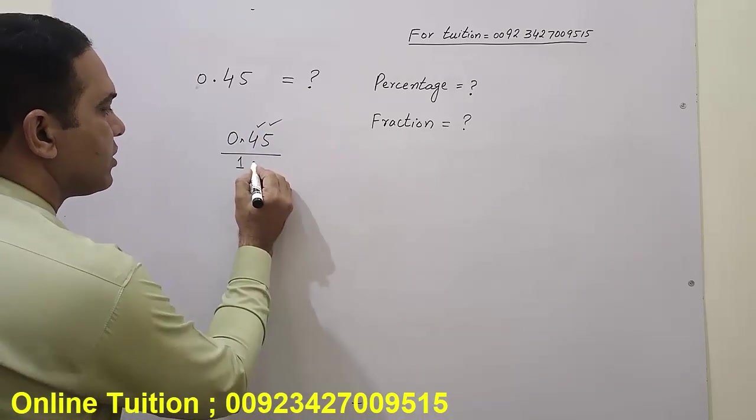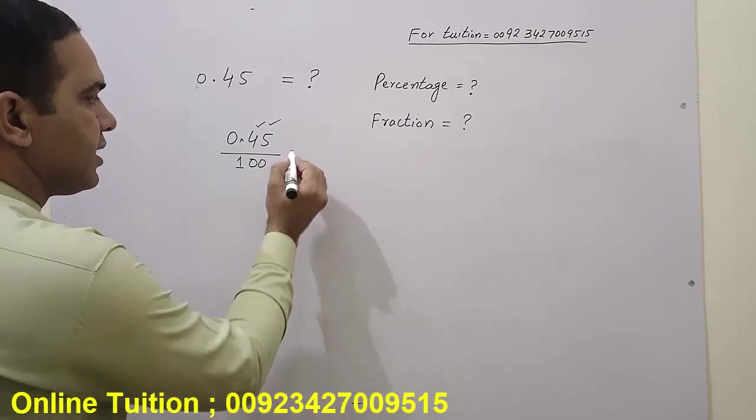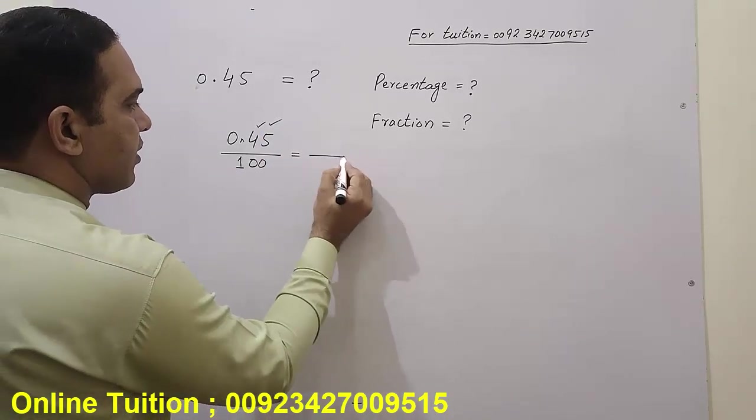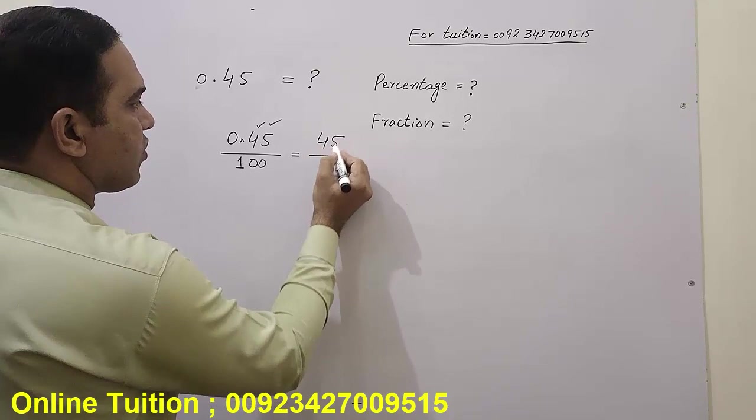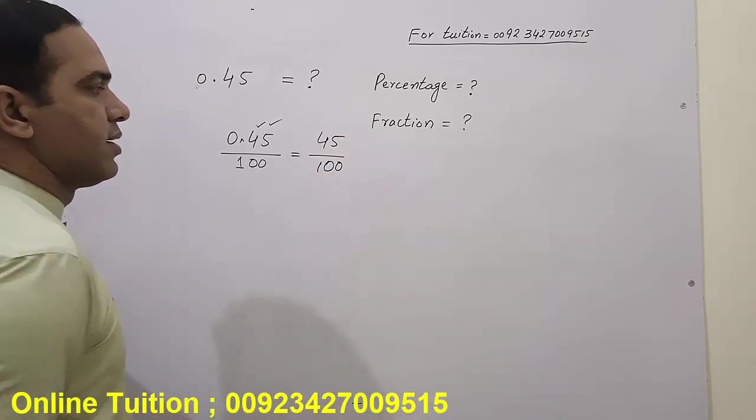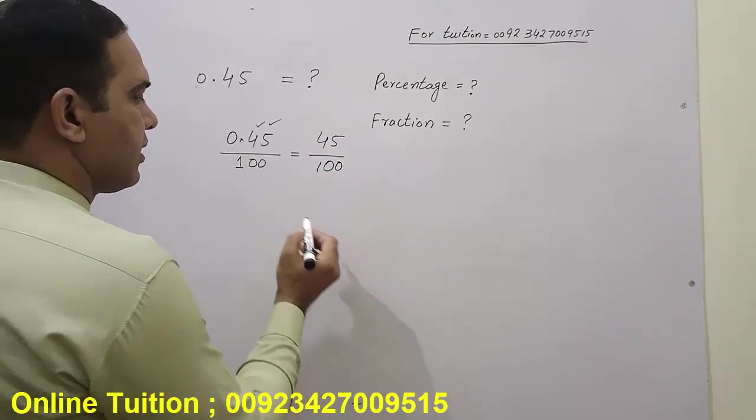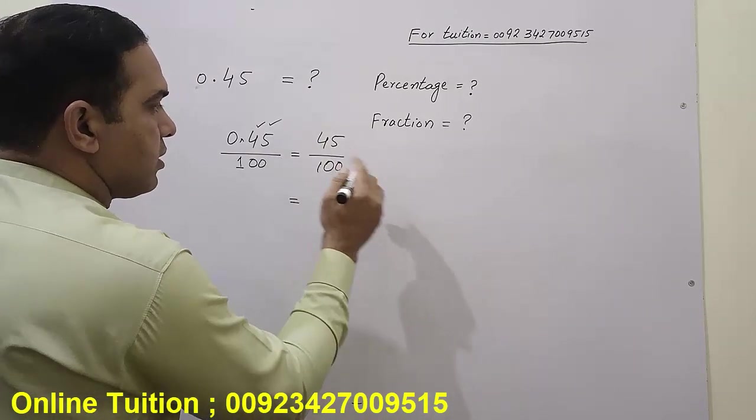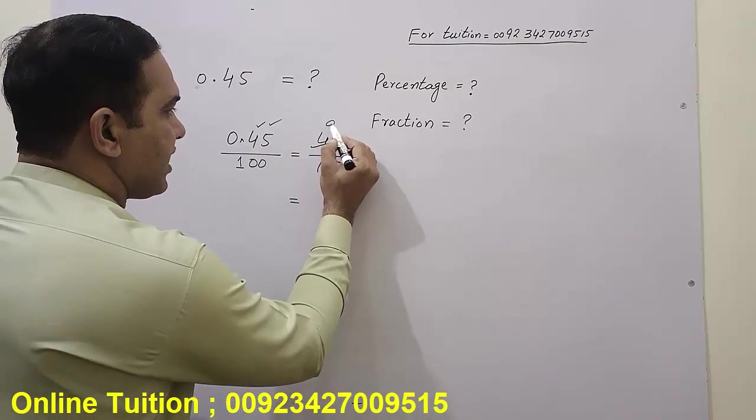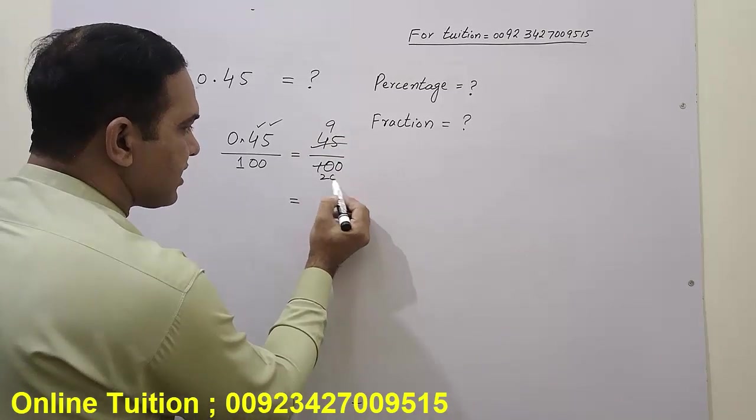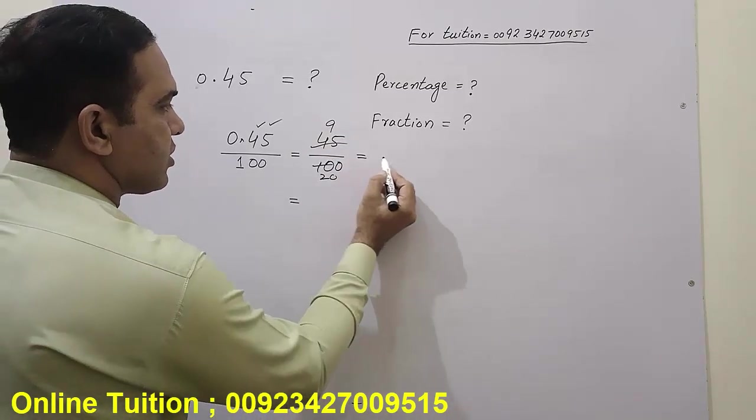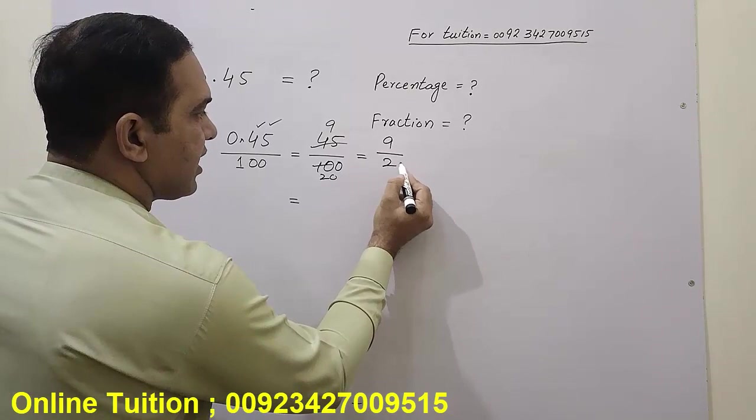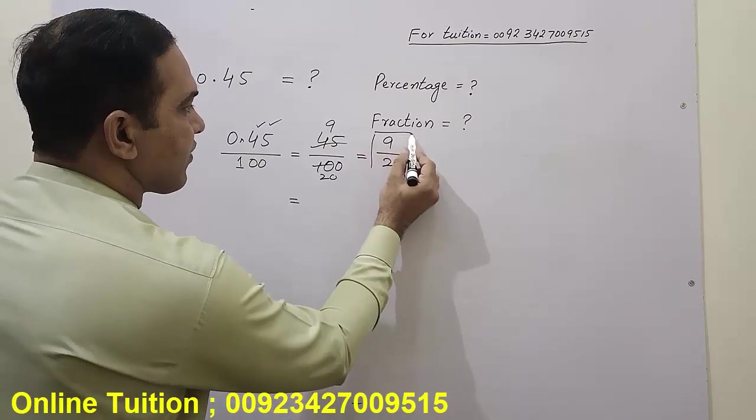This is 45 over 100. Clear. Cut this on five. Five nines are forty-five, twos are... So 9 over 20 is the simplest fraction.